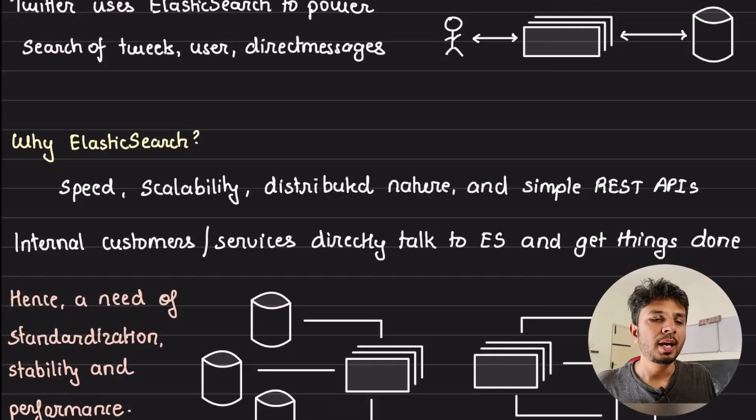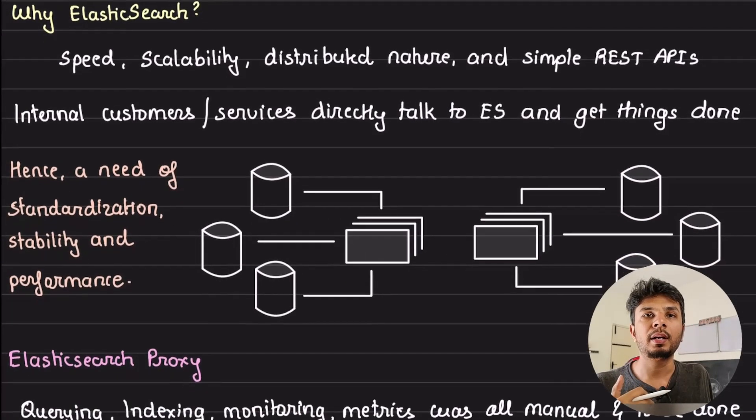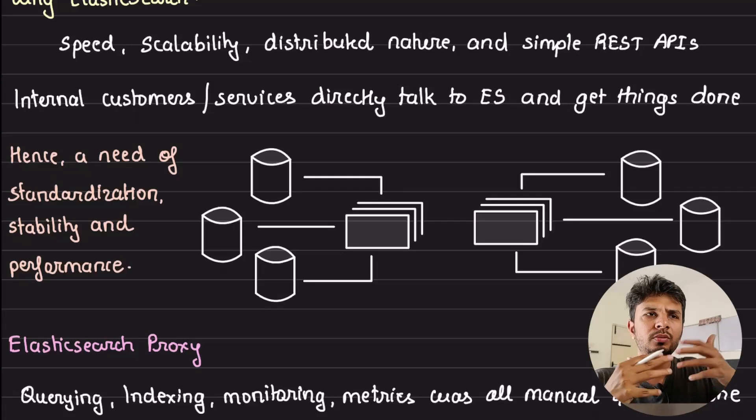Now before all the toolings that they built at Twitter, what happened? Every team was allowed to spin up the Elasticsearch clusters to get their things done. It's not just for search but maybe for other use cases - they might use it for example real-time aggregation, real-time analytics, and whatnot.